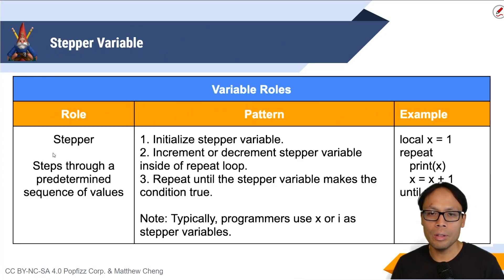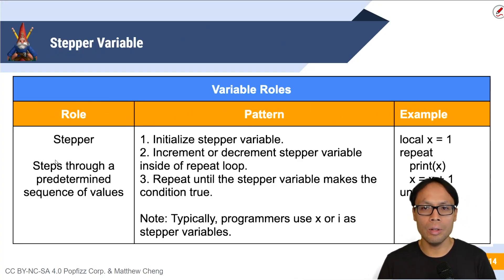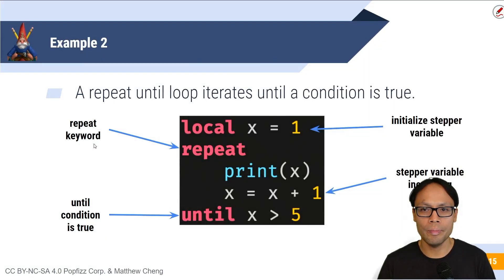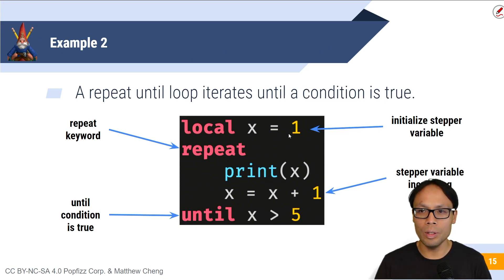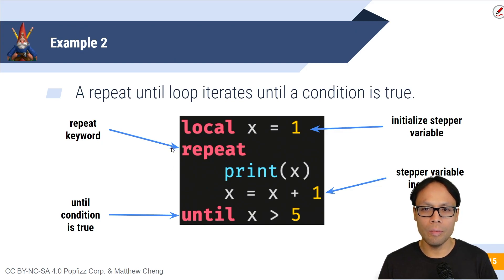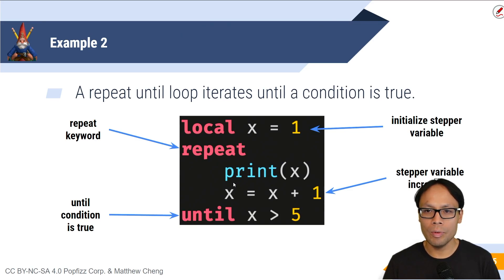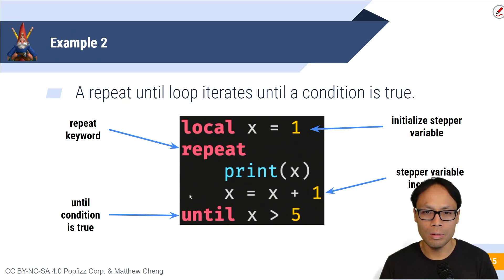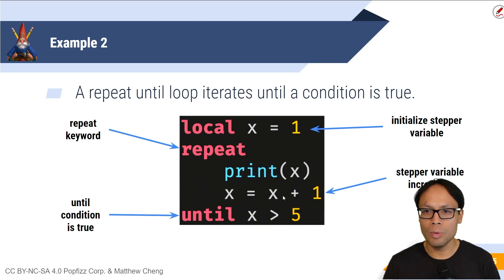Now we're going to look at another version of the repeat until loop using a stepper variable. With the stepper variable, we have local x equal to one — just like we had with our while loops, we're initializing the stepper variable. Then we have the new keyword repeat. Inside the repeat until loop we've got x equal to x plus one, because we're counting up. You could also count down in other versions. And then we're going to repeat until x is greater than five.